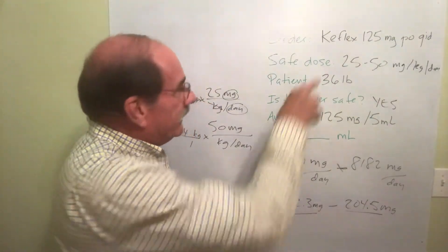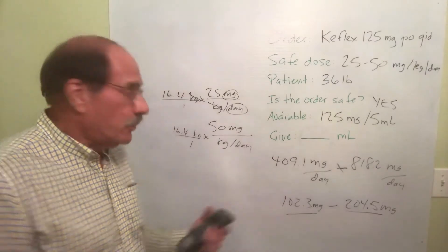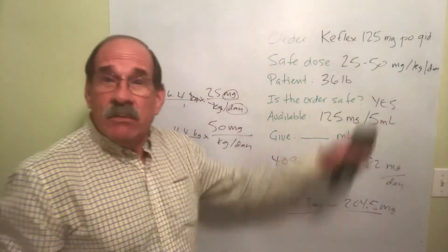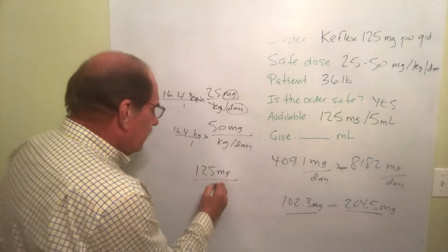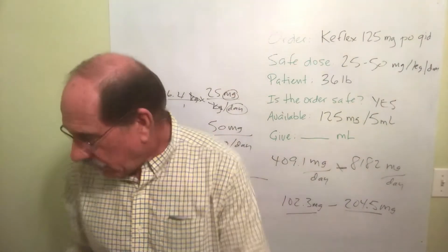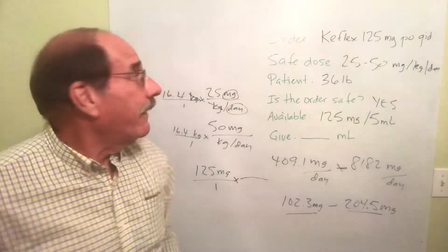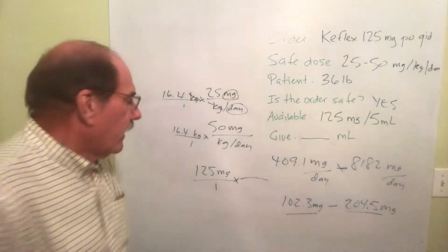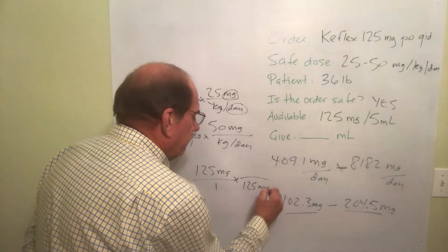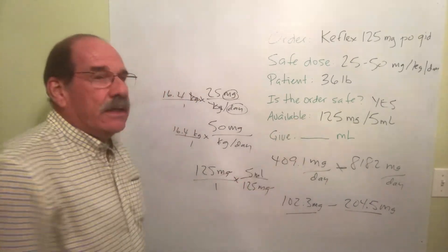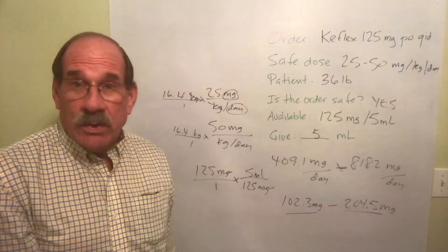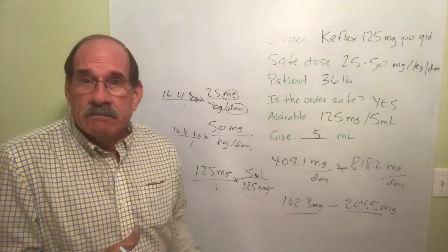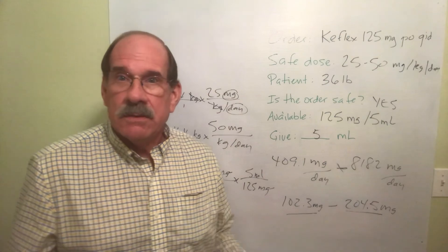Now that I know it's safe, what do I do? I give what the prescriber ordered: 125 milligrams. You don't give one of those range numbers — you give what was ordered. Now for the dosage calculation: the label shows the concentration is 125 milligrams per 5 milliliters. So 125 milligrams ordered, and there are 125 milligrams in every 5 milliliters — you're going to give 5 milliliters. Hope you got this down — that was fun!